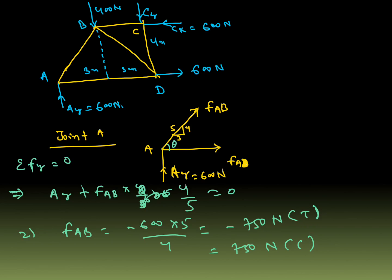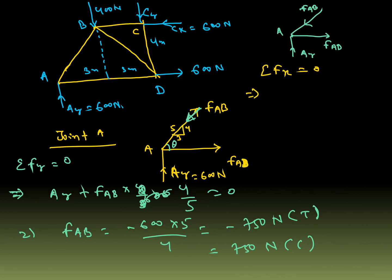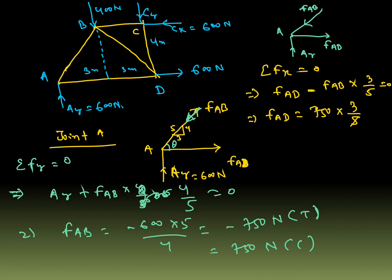FAB is compressive, so we change the direction. For force along AD, we consider the X direction. Summation of all forces at A in the X direction equals zero, right is positive, left is negative. So FAD minus FAB times cos theta equals zero, where cos theta is 3/5. FAD equals 750 times 3/5, giving 450 N. It is positive, so our assumption is correct — FAD is tensile, 450 N.